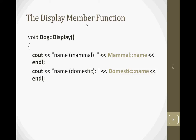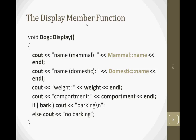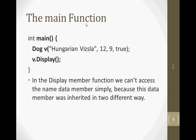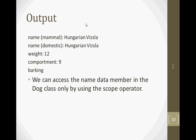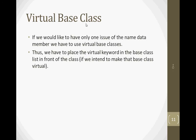The name data member is ambiguous, so scope resolution is used to explicitly resolve which name to use. If you don't have this scope resolution statement, you will get a compilation error. Weight and compartment are easy to access. In the display function, accessing the name data member requires specifying mammal's scope resolution or domestic's scope resolution for name. Without the scope resolution operator, the name data member access is ambiguous. Virtual base classes is the solution.